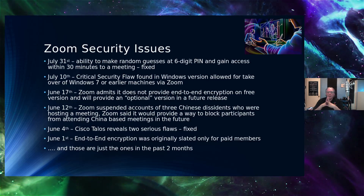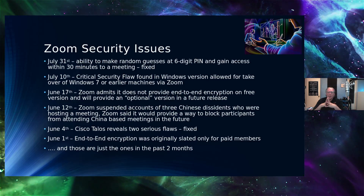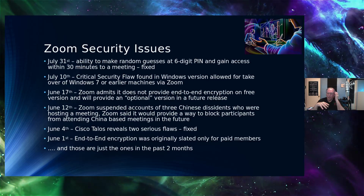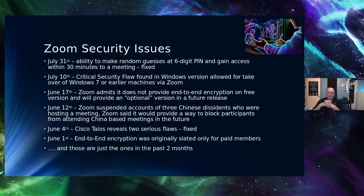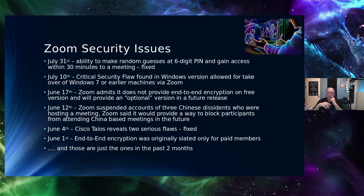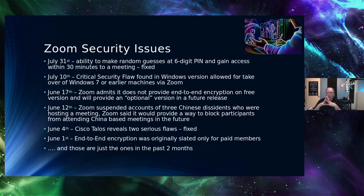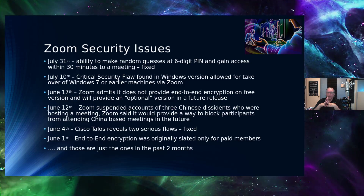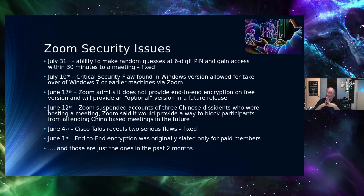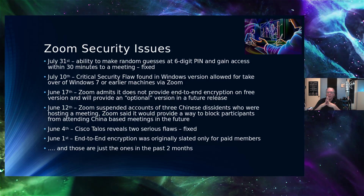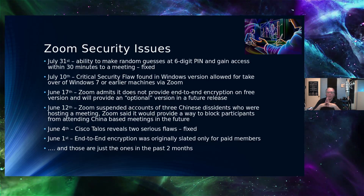That has since been fixed. On July 10th, a critical vulnerability was found in the Windows version that allowed an attacker to take over control of a Windows 7 or earlier machine via the Zoom client from within the meeting. My first response to that is — why are you still using Windows 7? That support has been dropped. I don't really consider that a truly serious security flaw, but it is what it is — it is a security flaw.